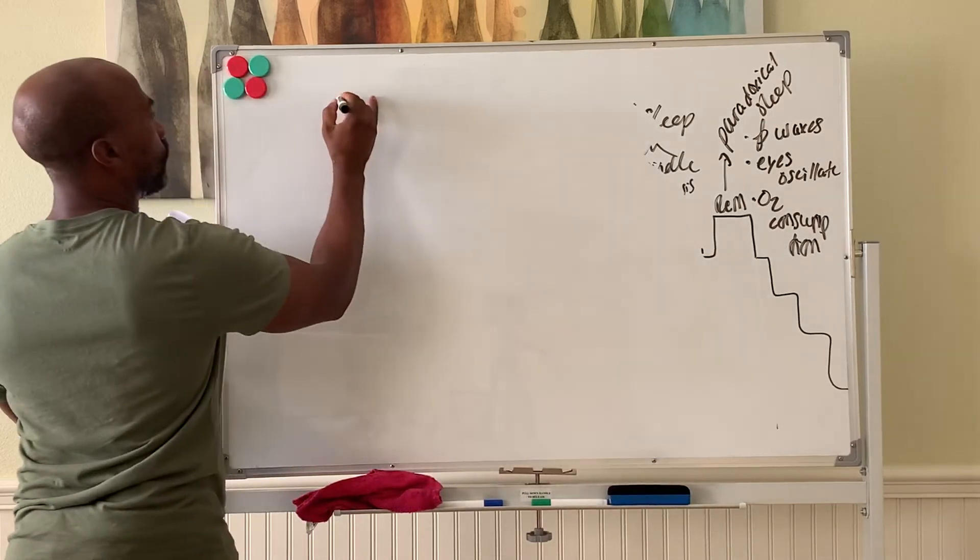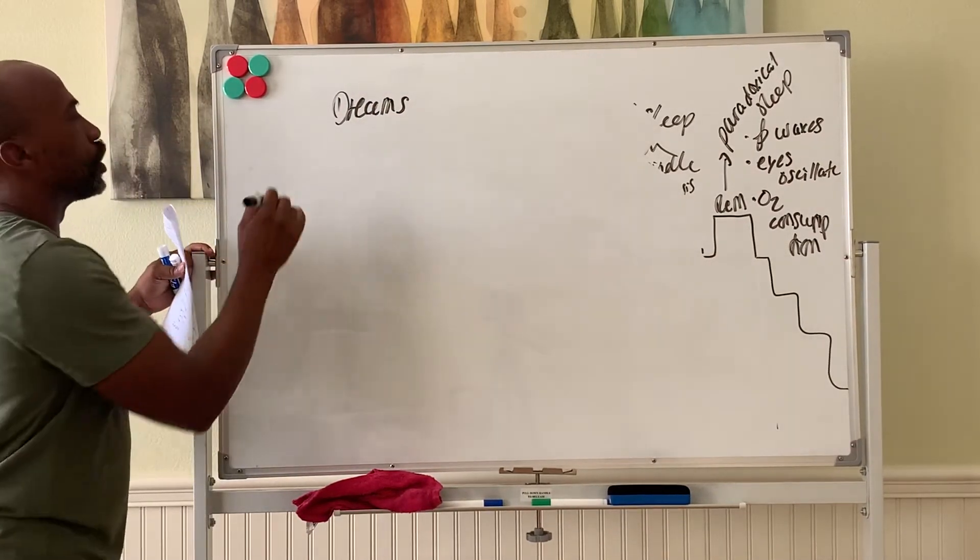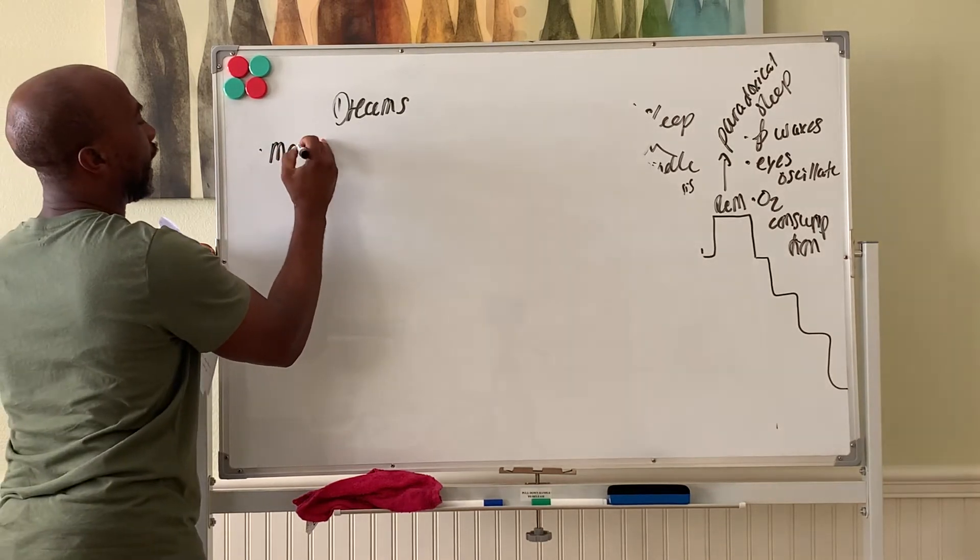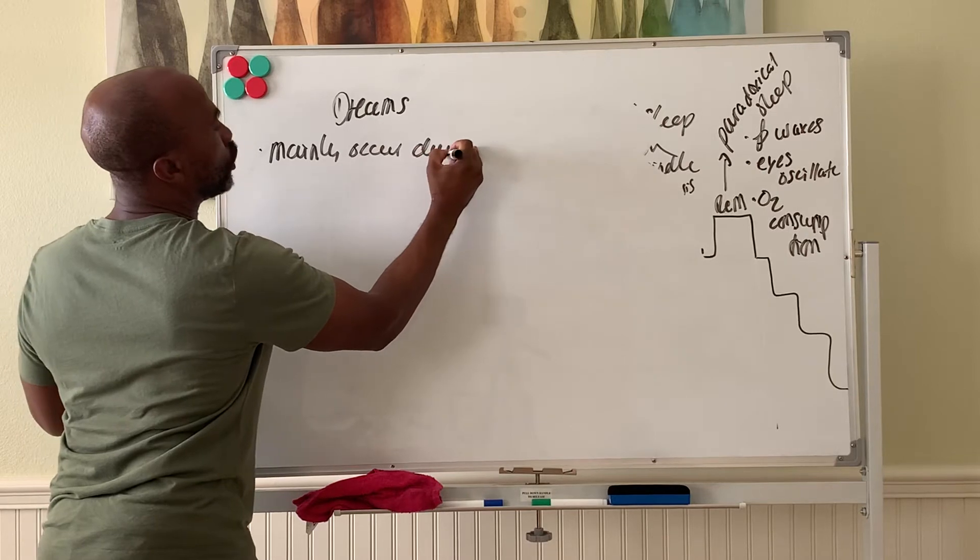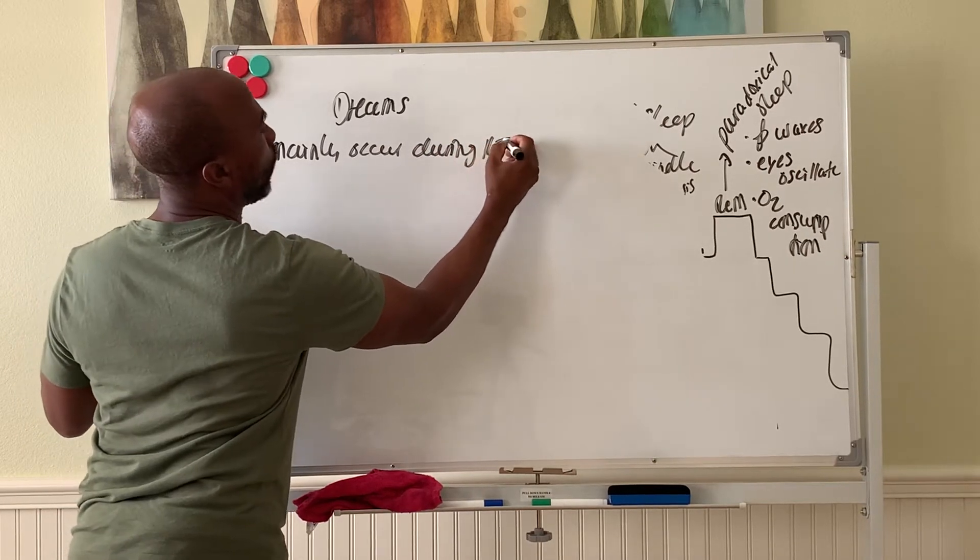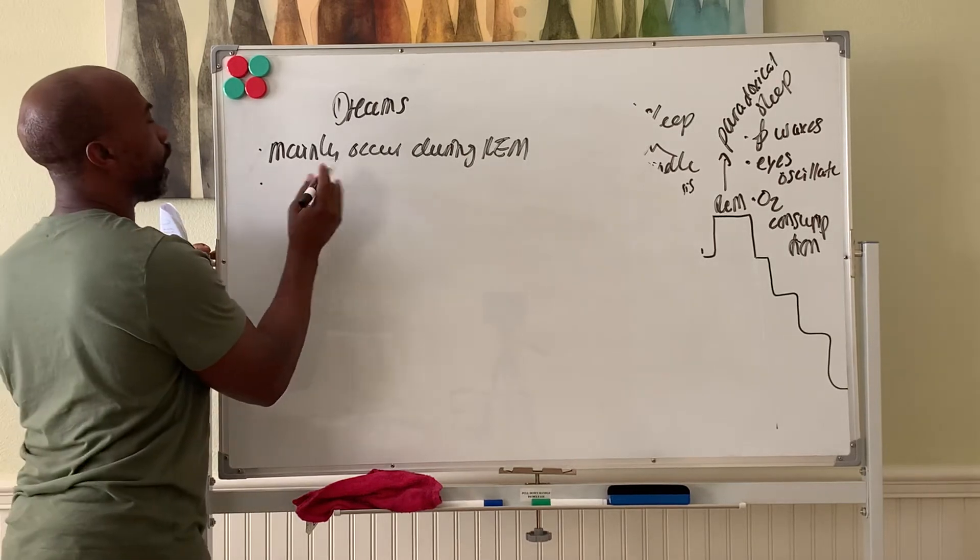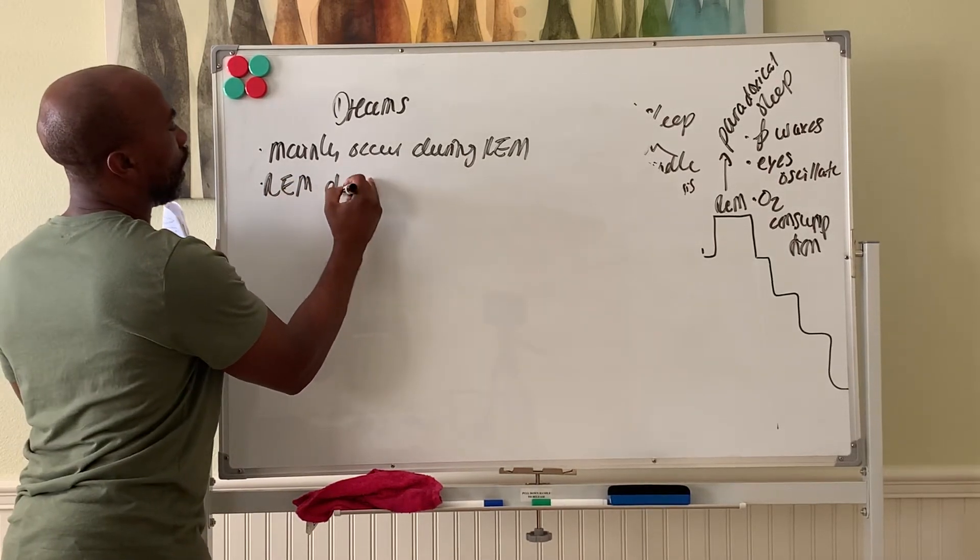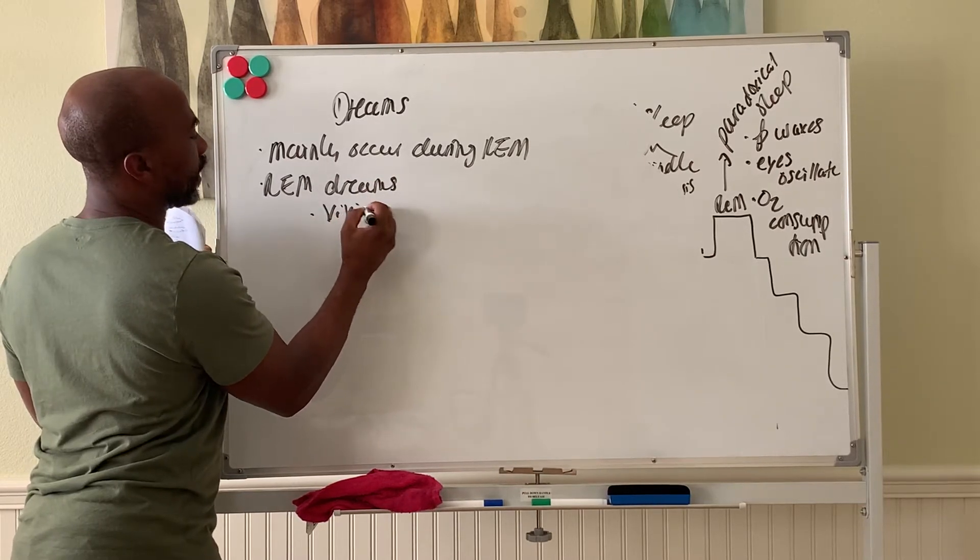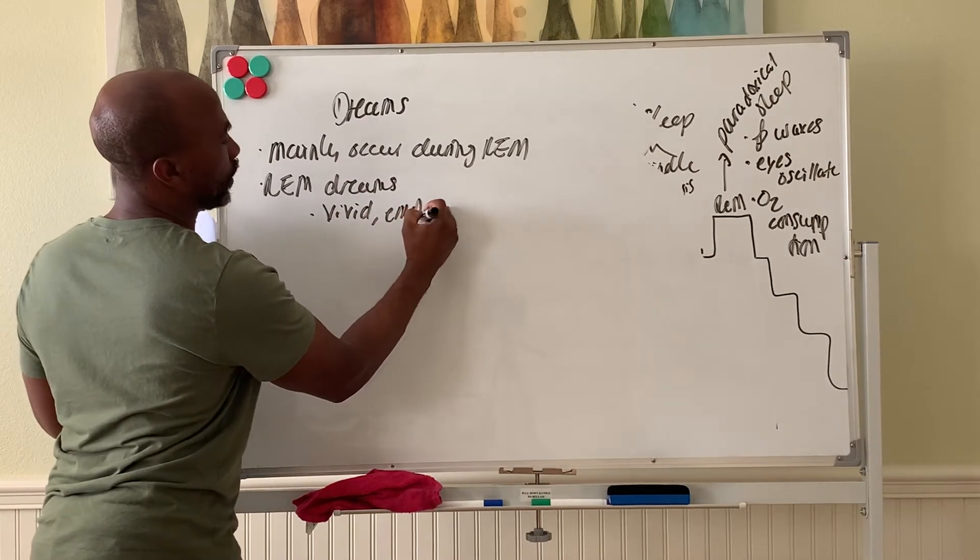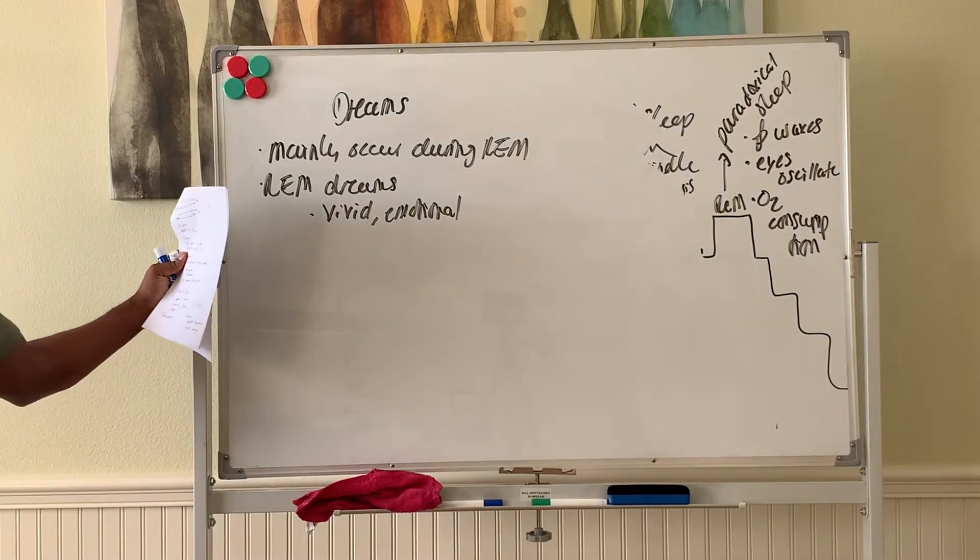Dreams occur, but dreams mainly occur during REM. That's where most often dreams occur. These REM dreams are vivid, emotional dreams, things that make your blood pressure go up while you're sleeping.